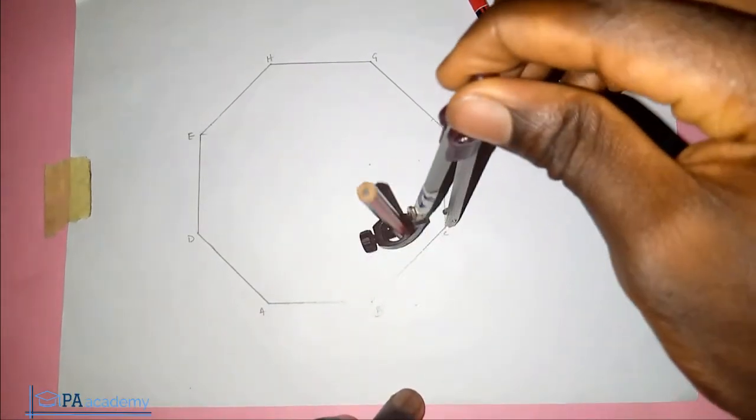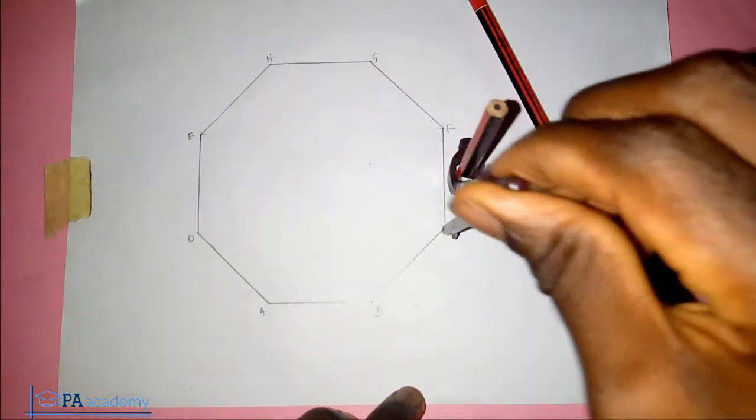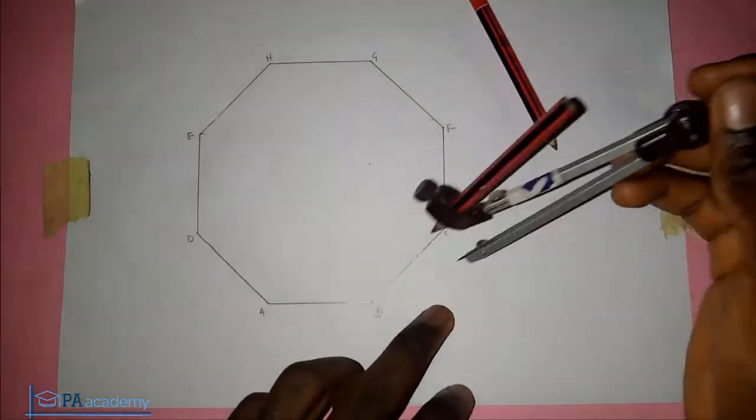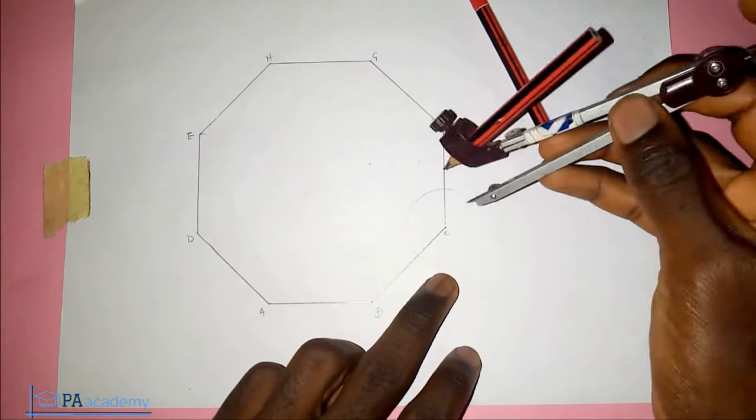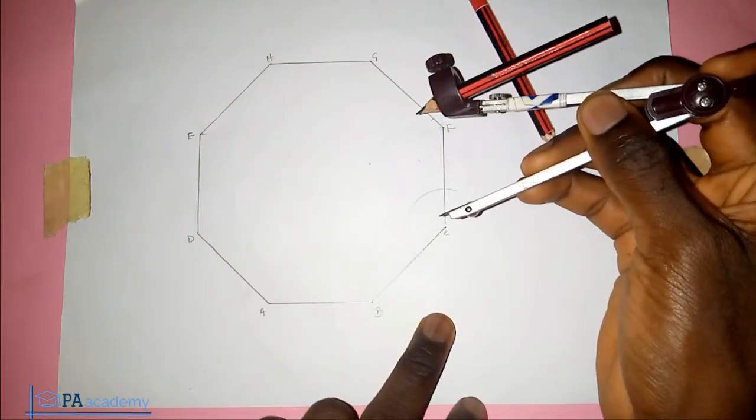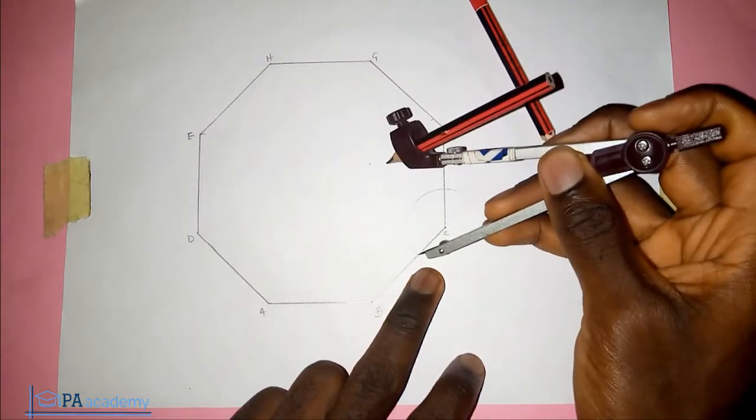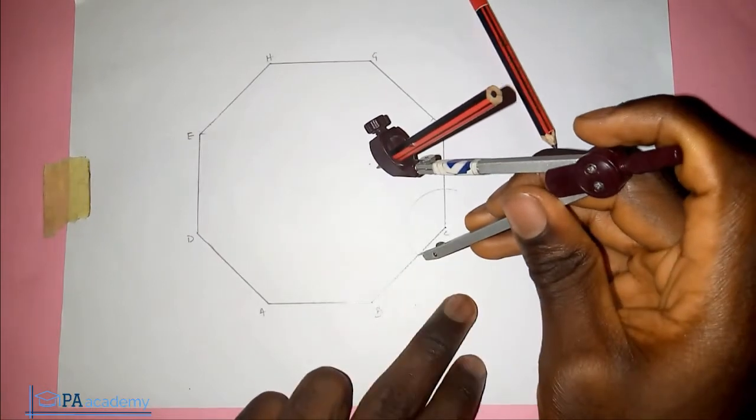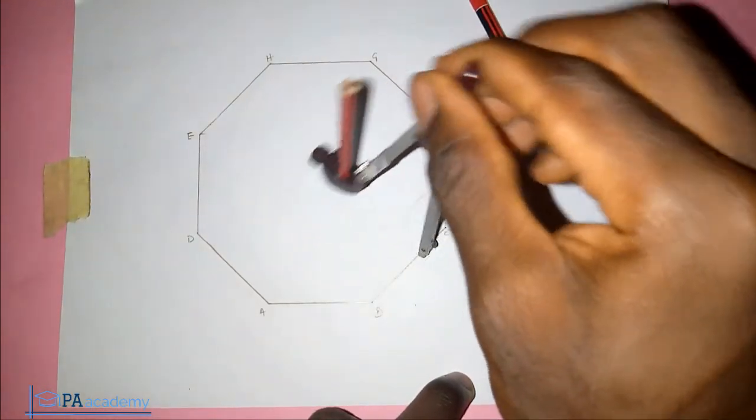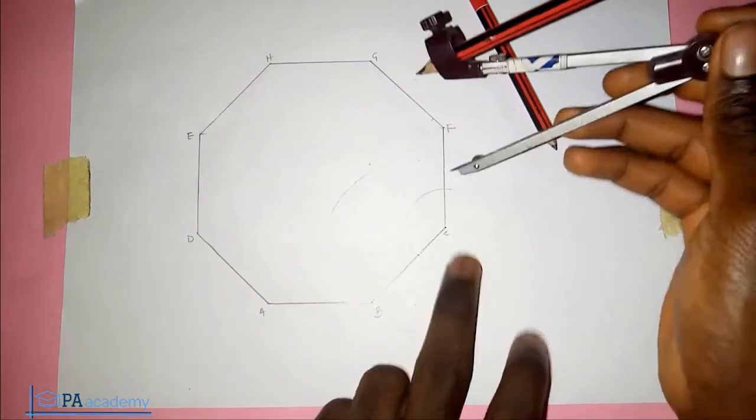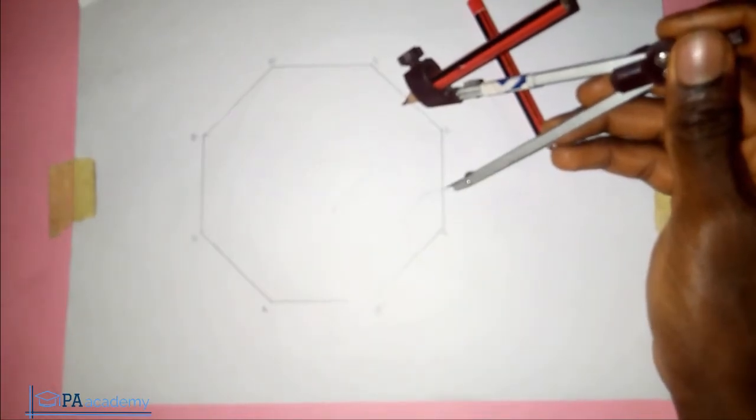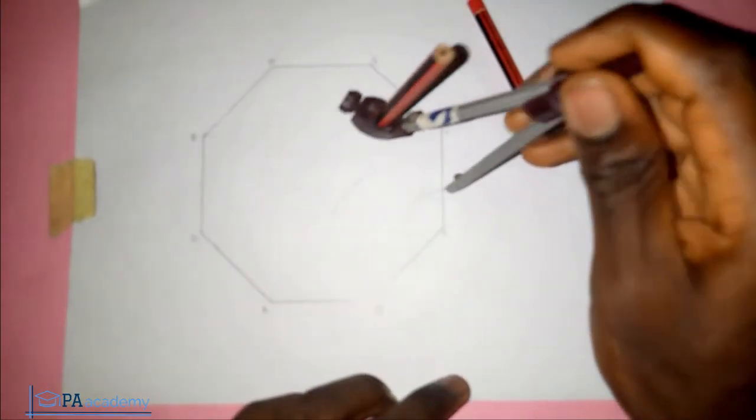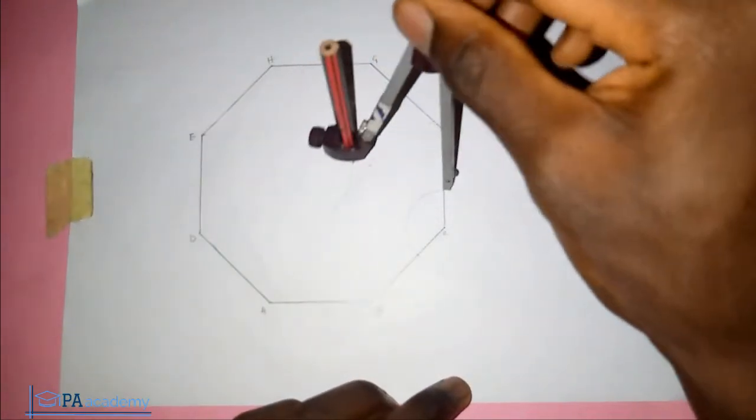So you draw this arc. Once you draw the arc, you can increase the length of the compass. From this point on line BC where this arc has just been drawn, you draw an arc with the same length. Then come to this other point again and draw another arc.